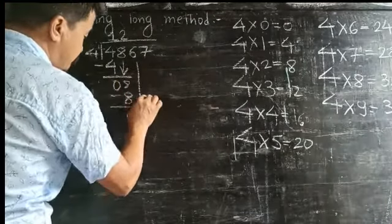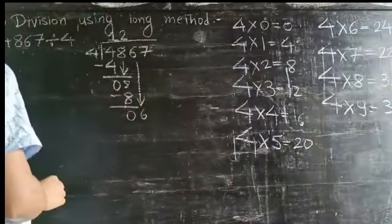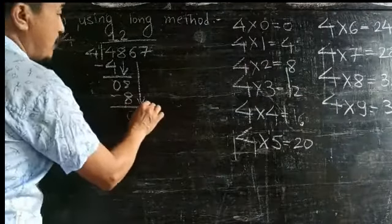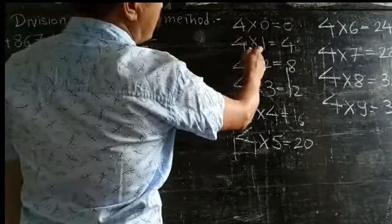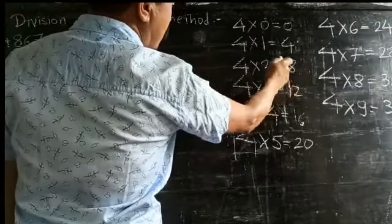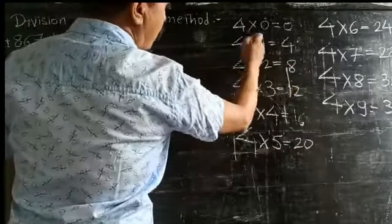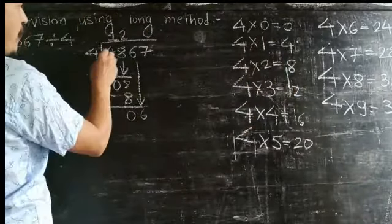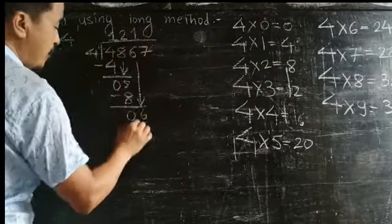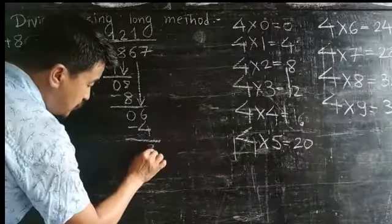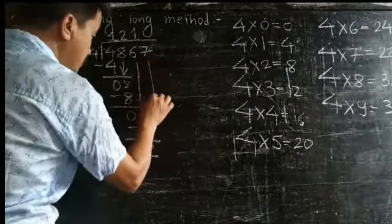Now look at the tables: 4×1=4, 4×2=8, but that is more than 6. Less than 6 is 4. 4×1=4. Now 4 will go into 6 one time. 4×1=4. Now 6 minus 4 equals 2. Now bring down this 7.